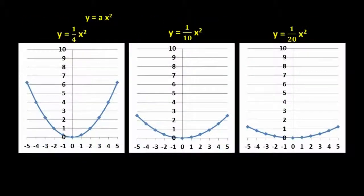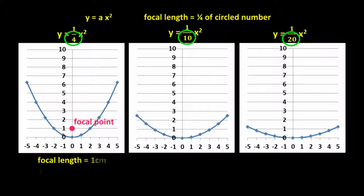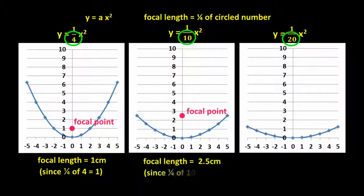It turns out that the focal length of every parabolic reflector equals a quarter of the denominator, the numbers being circled, if the equation is expressed as y equals one over a number x squared. If you draw the graphs onto graph paper and measure everything in centimetres, a y equals one quarter x squared graph has a focal length of one centimetre, since a quarter of four is one. And a y equals one tenth x squared graph has a focal length of two point five centimetres, since one quarter of ten equals two point five.